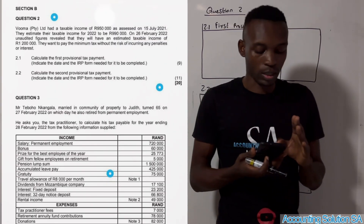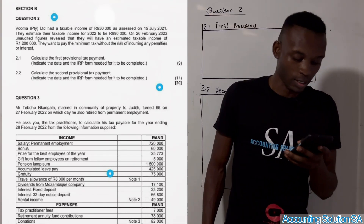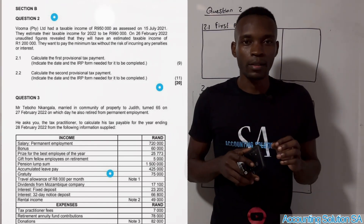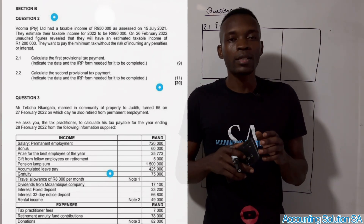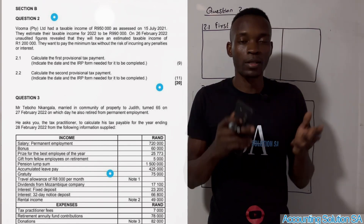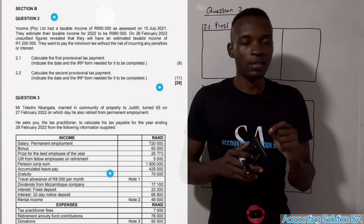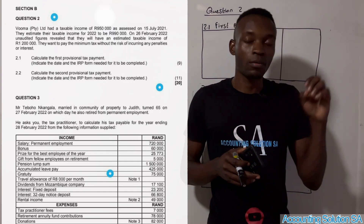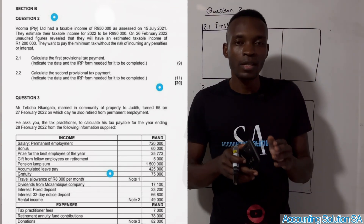Let's start with our question. They say: required - calculate the first provisional tax payment; 2.2 - calculate the second provisional payment. What you need to know about provisional payment when it comes to a company: let's say our year is starting January up to December. The business needs to calculate how much they owe SARS when it comes to income tax, because you have to first draft an income statement for the year end so you can see how much tax must be paid. It doesn't mean that SARS has to wait until December. We have what we call provisional payment - it is an estimation that you need to pay during the year.